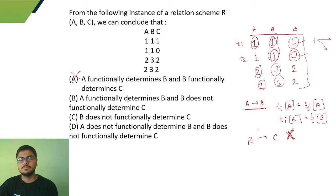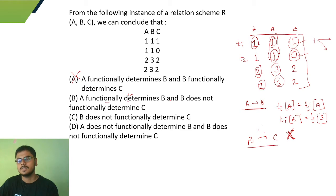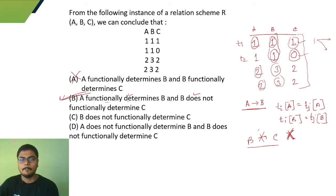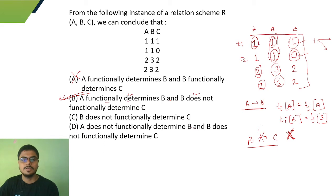So the correct option is: A functionally determines B — this is correct. And B does not functionally determine C — this is also correct. So option B combining both of these is the correct answer. Option C says only 'B does not functionally determine C' — also technically correct, but option B is more complete. Option D says 'A does not functionally determine B' — incorrect. And 'B does not functionally determine C' — the second part is correct, but since the first part is wrong, D is not the answer.